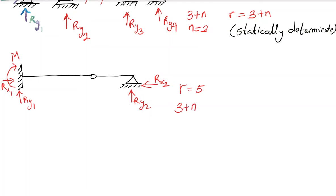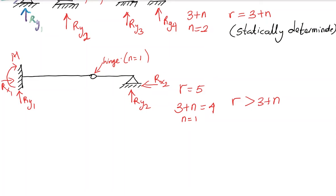So r equals five. Now let's check three plus n. We have three equilibrium equations. Because of this single hinge, n becomes equal to one, making three plus n equal to four. Since r equals five is bigger than three plus n equals four, this structure is statically indeterminate.